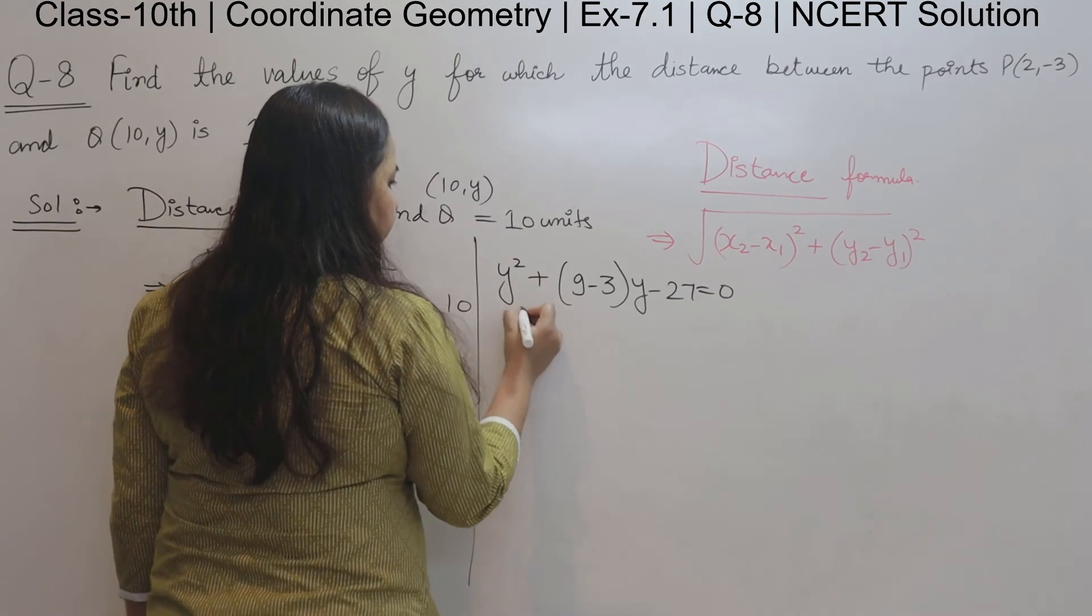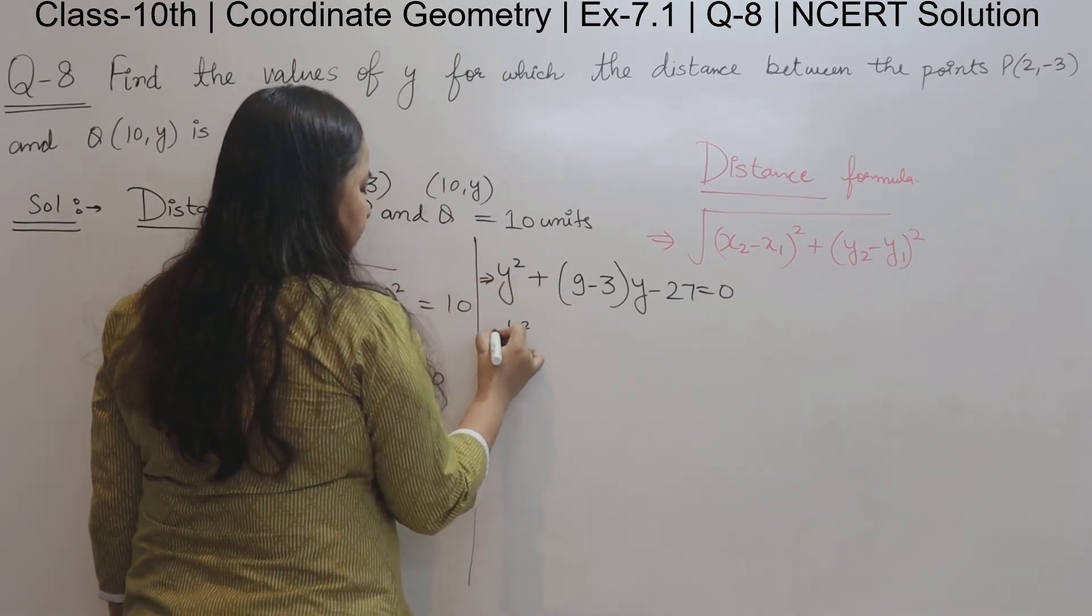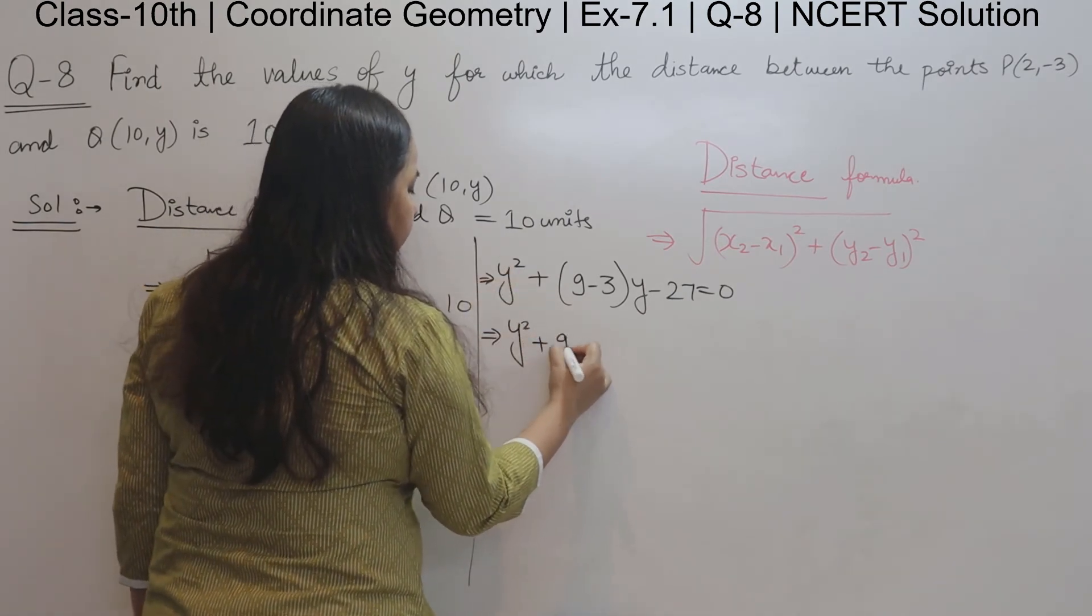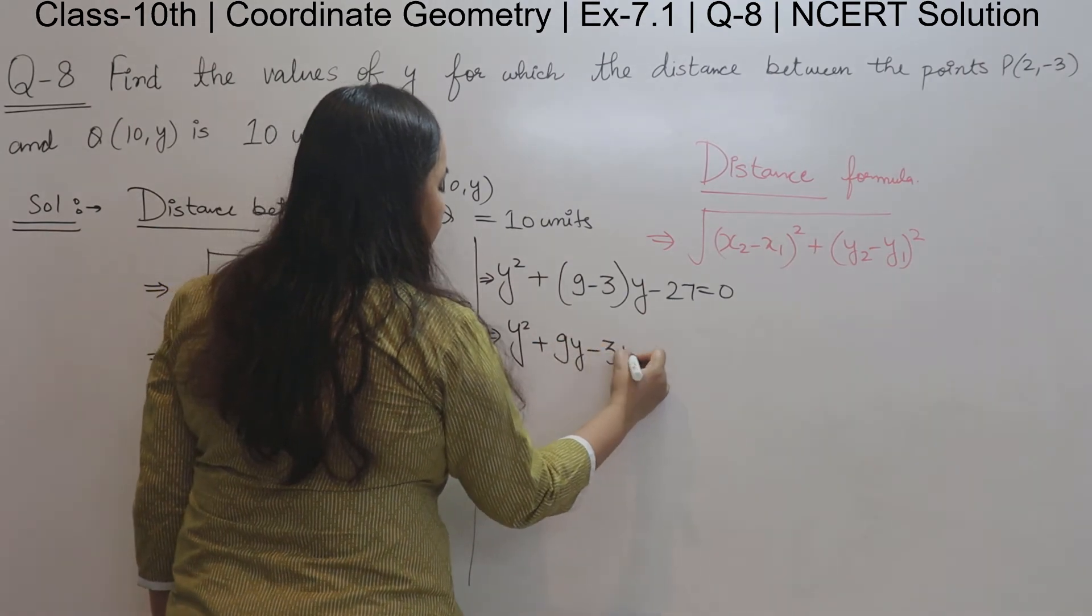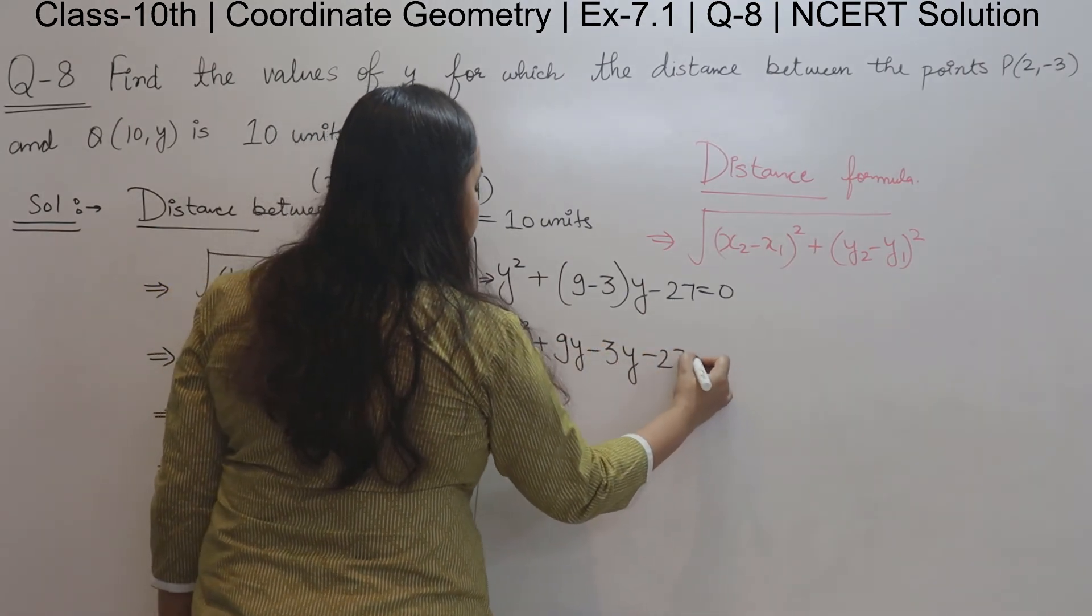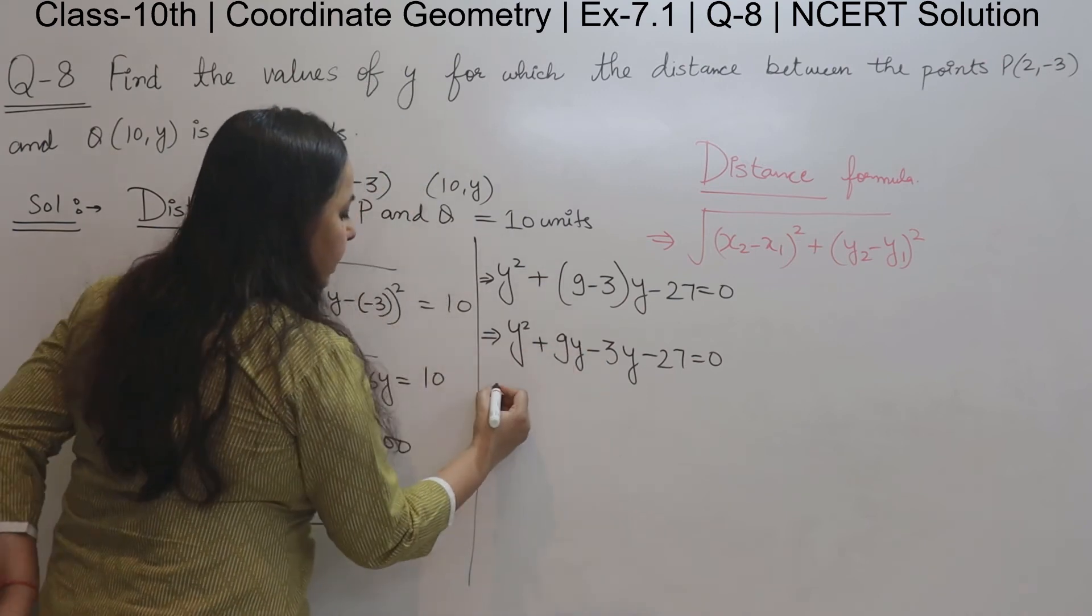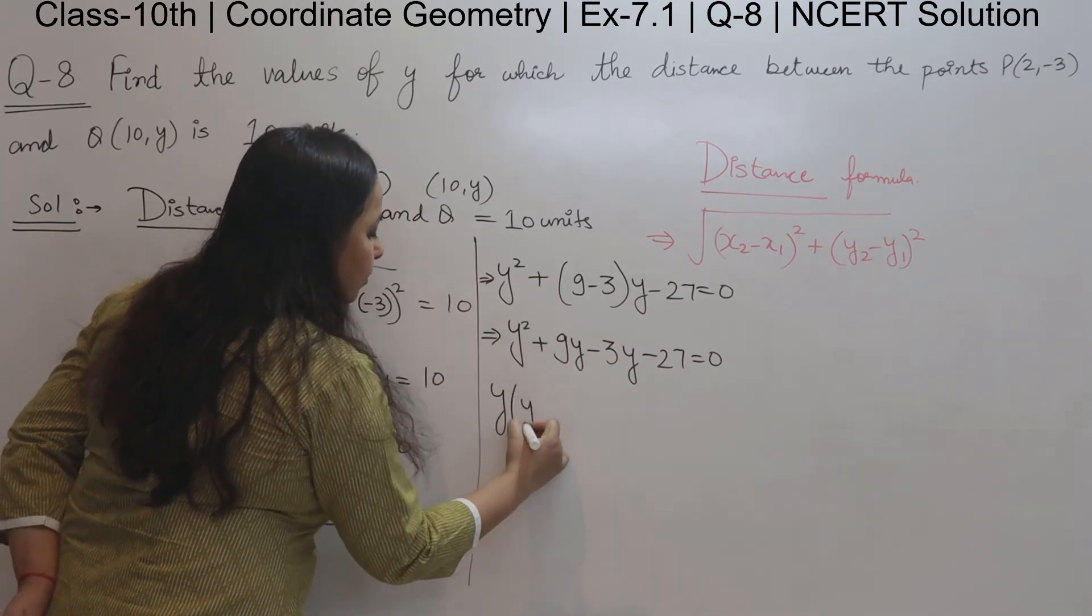So y squared plus 9y minus 3y minus 27 is equal to 0. We'll take y as common, so y times y plus 9.